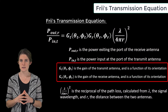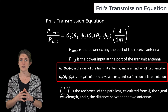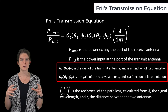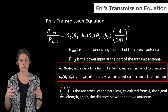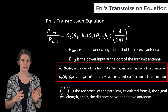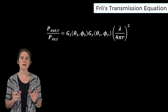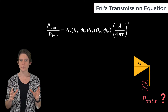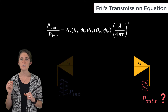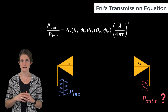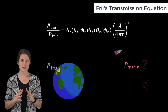The antenna gain terms depend on the orientation of the antennas. If the antennas are not oriented for maximum transmission, these terms will reduce the system gain accordingly. This formula allows us to calculate how much total power would be received by a receive antenna given a particular amount of input power at the transmit antenna.